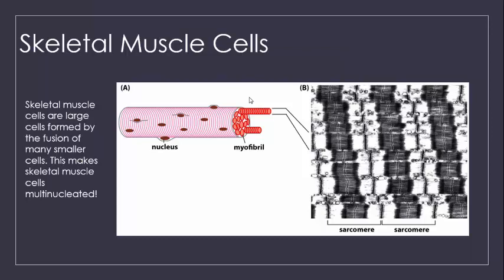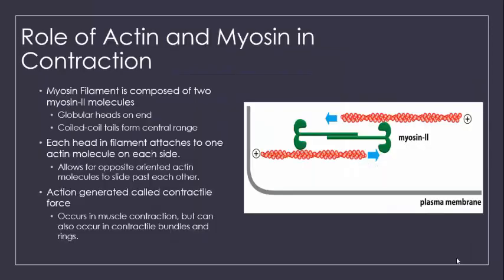The sarcomeres consist of actin and myosin filaments. Muscles have two main fiber components: actin and myosin. The myosin filament is actually a dimer composed of two molecules, formed with two globular heads on each end. The tails of each of these myosin II molecules come together to form a coiled coil in the center. This myosin filament serves as a buffer between two actin molecules.